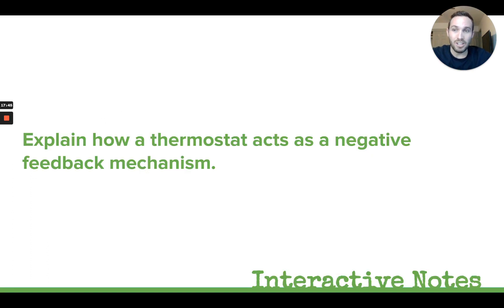To summarize: negative feedback is whenever the response is opposite to the stimulus — something went up and your response makes it go back down, or something went down and your response makes it go back up. Positive feedback is when the response amplifies what the stimulus was doing — making it go even further in the same direction. That's it for topic four and for the unit 4.1 notes. Thank you guys.